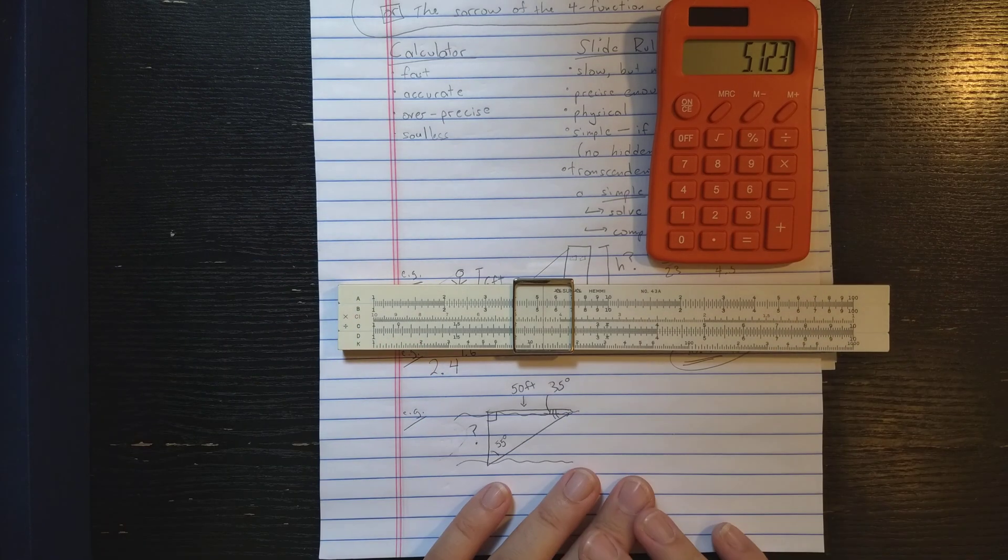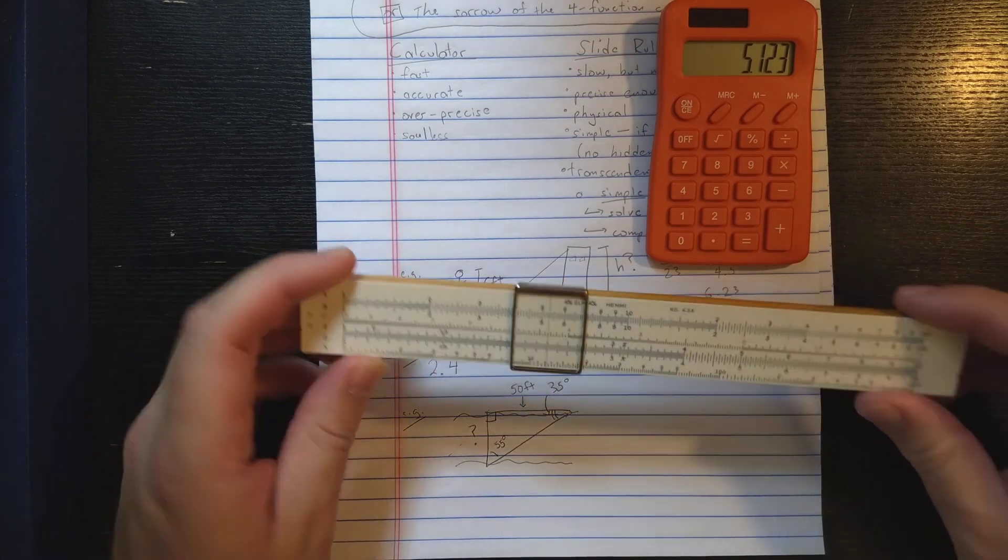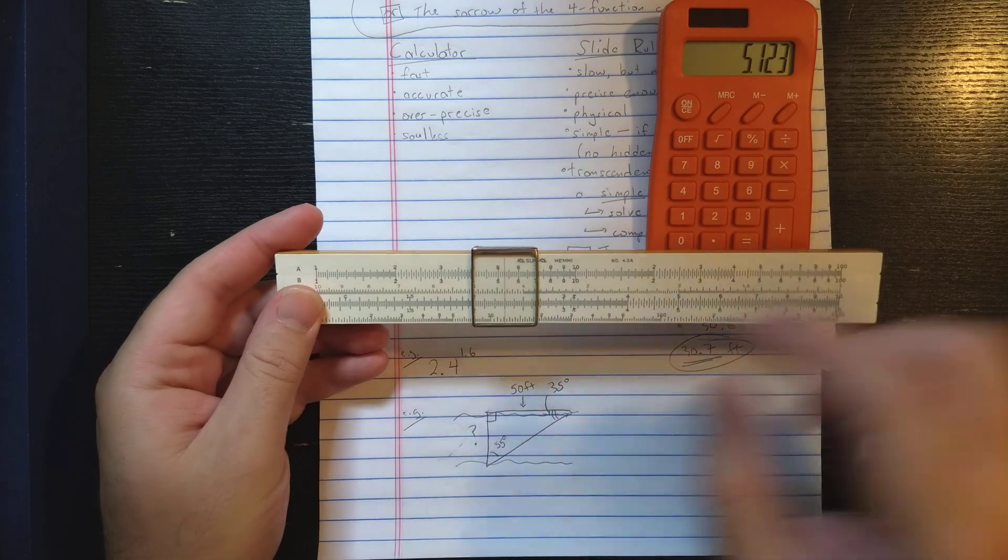Okay. With the exception of addition and subtraction, right? So let's see here. Let's say I want to do 2.4 to the 1.6.